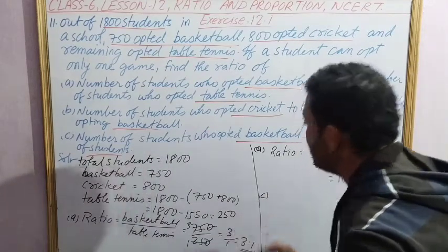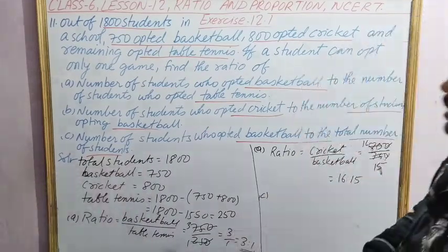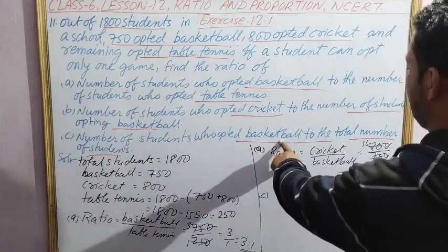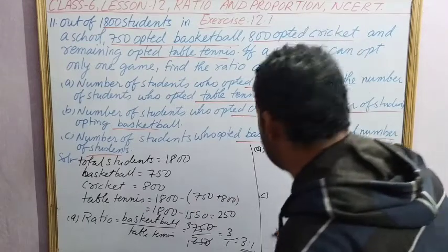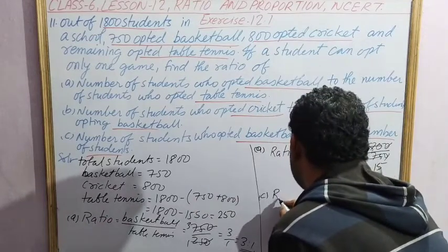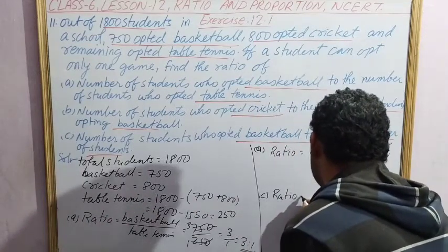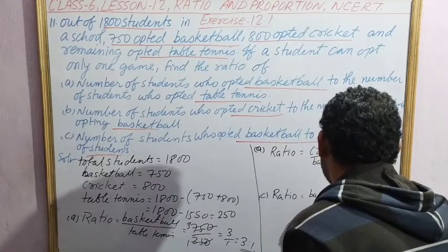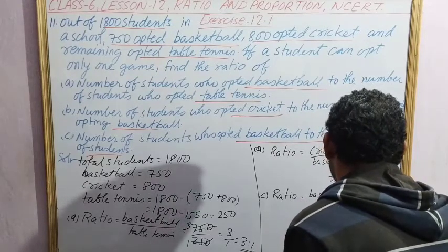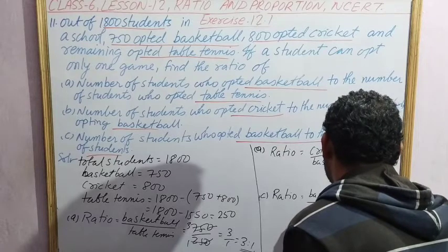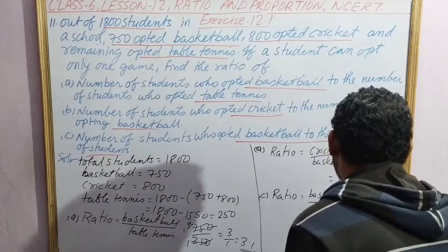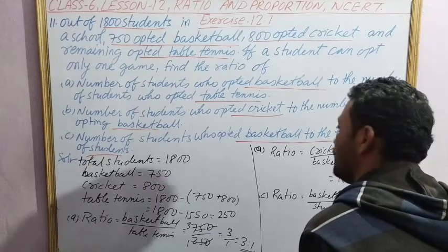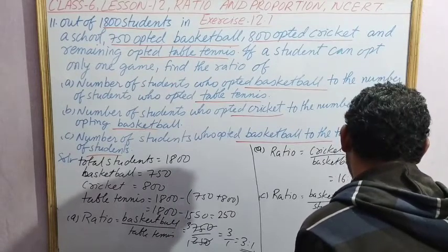And third question C: total number of students who opted basketball to total number of students. Ratio equals basketball by total students: 750 by 1800.